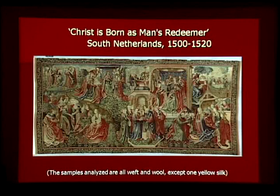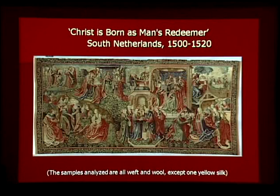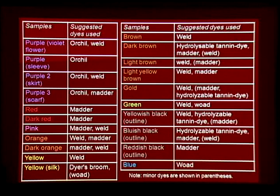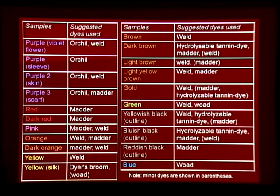I'd like to show the result of the dye analysis. Because this symposium has been organized to celebrate the completion of this tapestry's restoration, I will begin with this tapestry. It was probably woven in the South Netherlands at the beginning of the 16th century. The major dyes used on the tapestry were madder, weld, woad, and mixtures of these, as well as oak gall, dyer's broom, and hydrolyzable tannin dye. Dyer's broom was used on the yellow silk sample. There are many different types of madder dye, including munjeet or wild madder, but the madder referred to in this talk is so-called European madder, Rubia tinctorum.